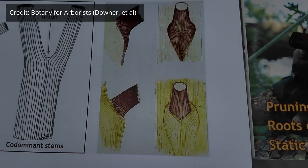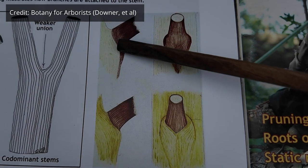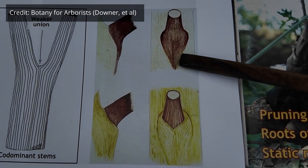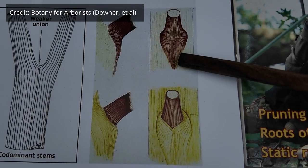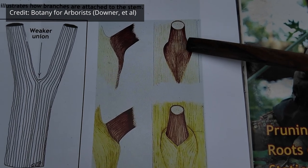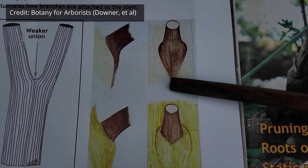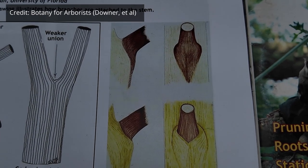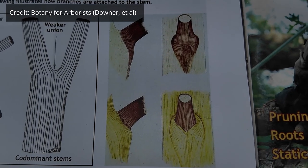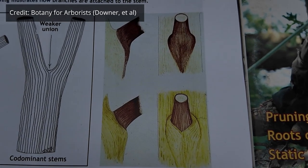From a conducting point of view, the branch is only attached to the stem at the bottom on the underside. The wood comes down, curves around, and is attached there. They discovered this by injecting dye into the branch and seeing where it showed up in the stem.